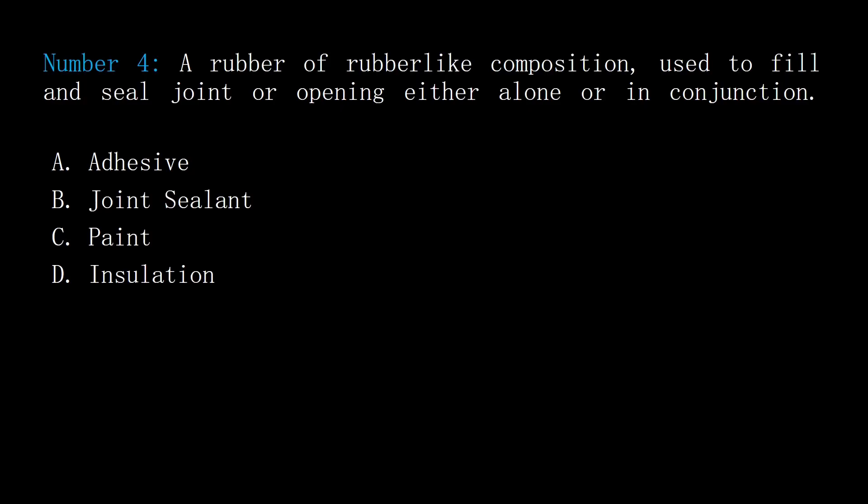Number 4. A rubber or rubber-like composition used to fill and seal a joint or opening, either alone or in conjunction. A: adhesive. B: joint sealant. C: paint. D: insulation. Answer: B, joint sealant.